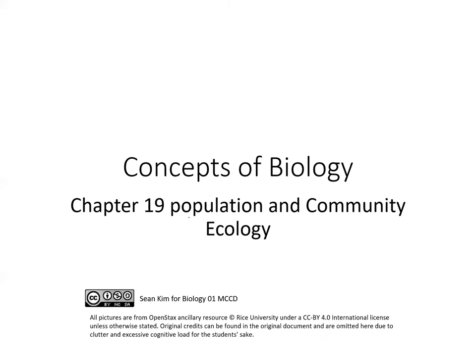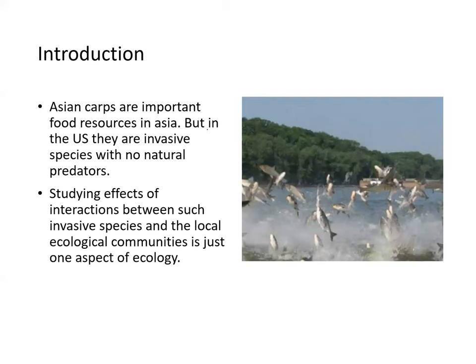We'll be talking about population and community ecology today. Many people have heard of Asian carps, which are an important food source in Asia, but in the US they're considered an invasive species with no natural predators. Studying the effects of interaction between such invasive species and the local ecological community is one aspect of ecology.